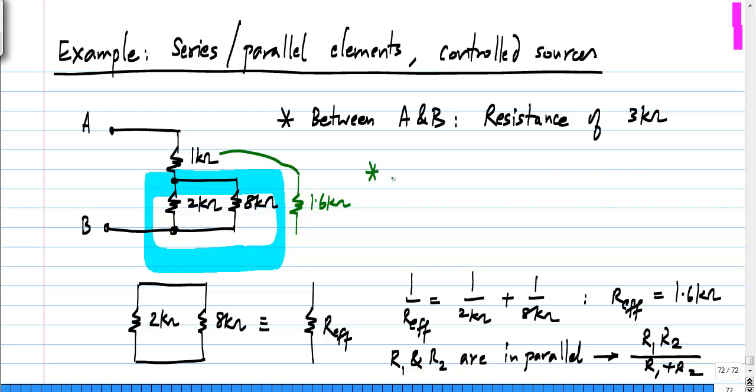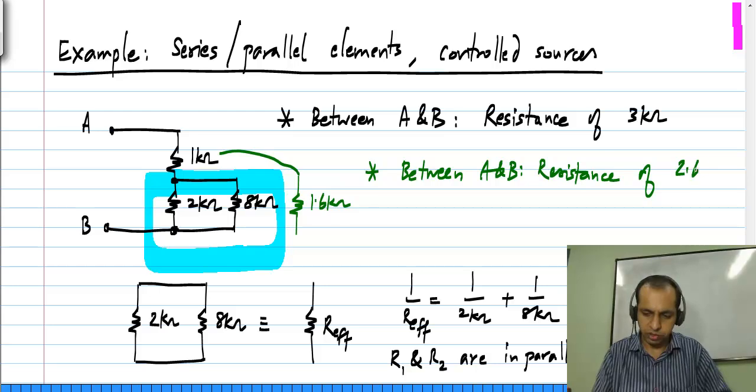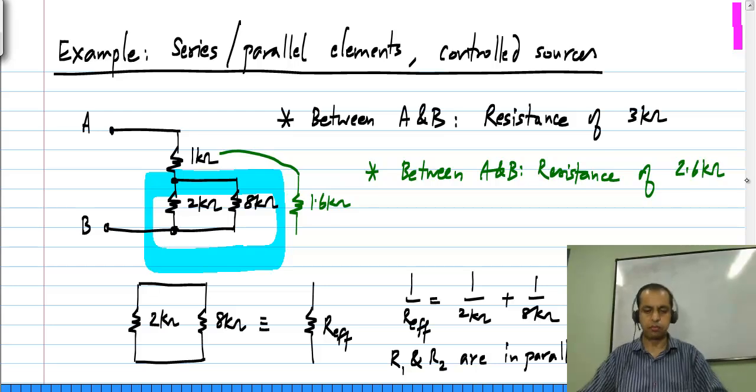In the new circuit when we have the 8 kilo ohm resistor also, we have an effective resistance of 1.6 plus 1 which is 2.6 kilo ohms. So quite simple.